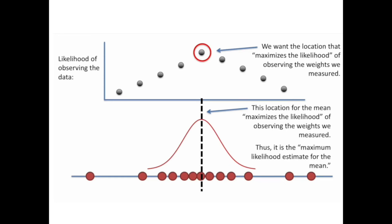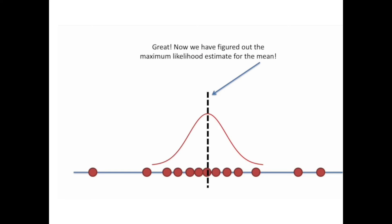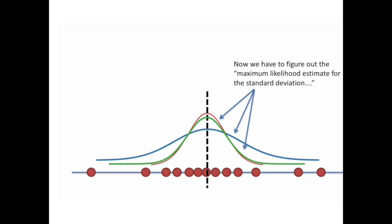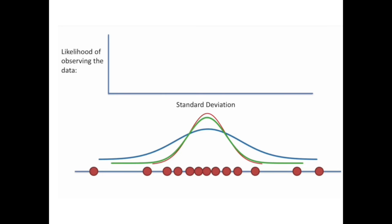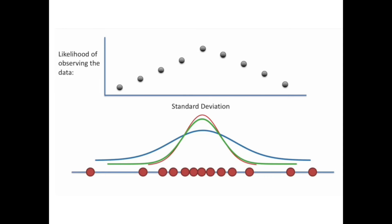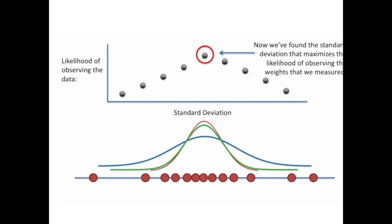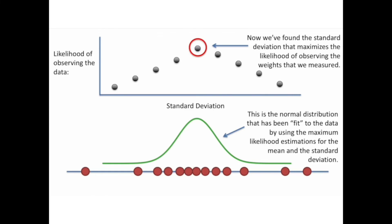For a normal distribution, the maximum likelihood estimate for the mean and the mean of the data are the same. Now we have to figure out the maximum likelihood estimate for the standard deviation. For this, we can plot the likelihood of observing the data against the standard deviation, calculated the same way as for the mean. We find the standard deviation that maximizes the likelihood of observing the weights we measured. This gives us the normal distribution fit to the data using maximum likelihood estimates for the mean and standard deviation.